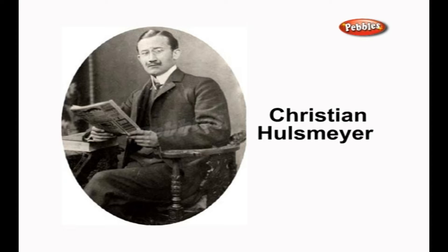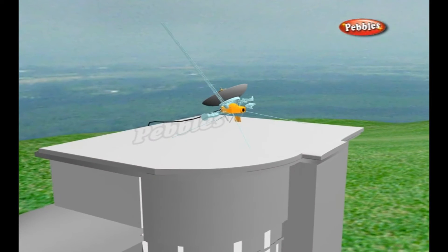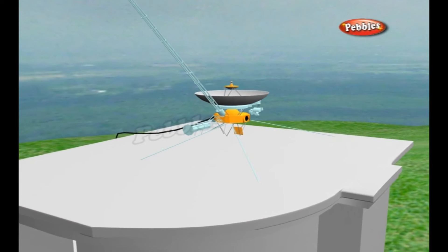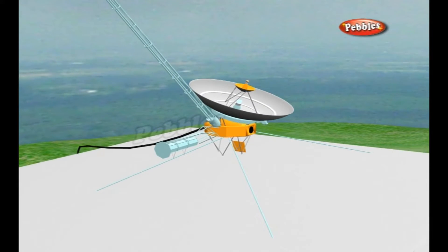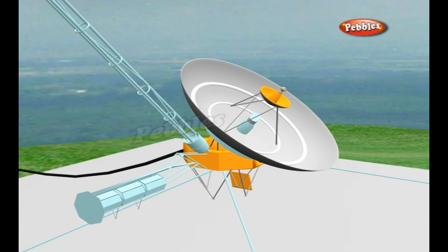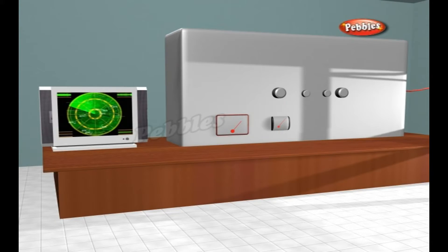The first to use radio waves to detect the presence of distant metallic objects was Christian Holzman. Whether it's mounted on a plane, a ship, or anything else, a radar set needs the same basic set of components: something to generate radio waves, something to send them out into space, something to receive them, and some means of displaying information so the radar operator can quickly understand it.